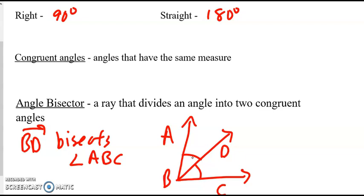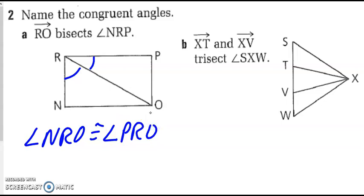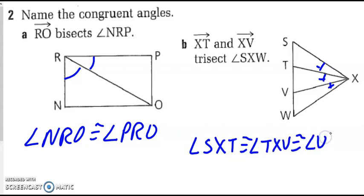Okay, so let's try a few examples here. Name the congruent angles. So all we know in part A is that ray RO bisects angle NRP. So we only know something about this angle here. So if it's bisected, those are congruent. So you could say angle NRO is congruent to angle PRO. Moving over to B, here we have ray XT and ray XV trisect angle SXW. So this larger angle, and again, that's the only thing we know. So these three angles would then be congruent. So I would have angle SXT congruent to angle TXV congruent to angle VXW.